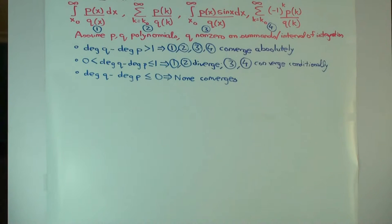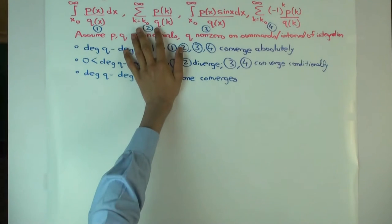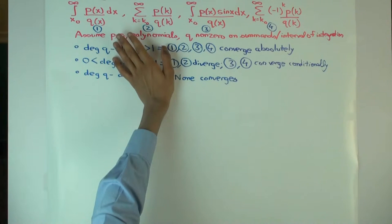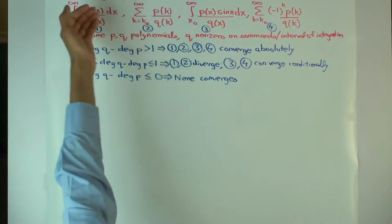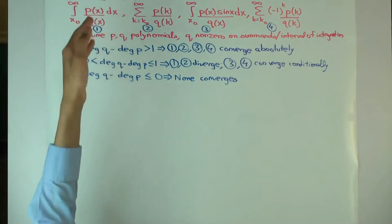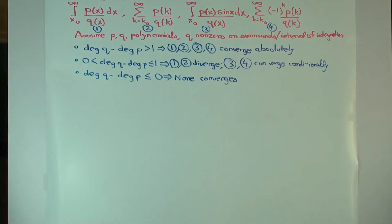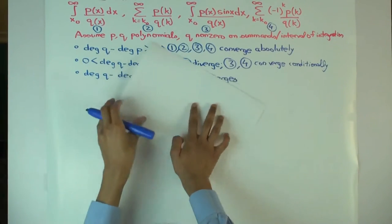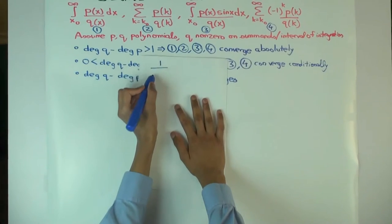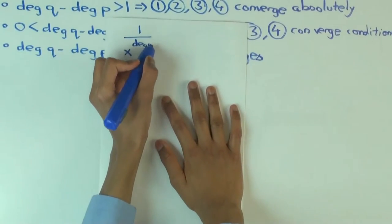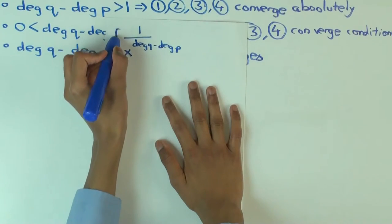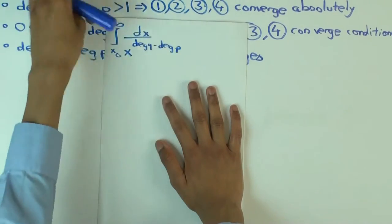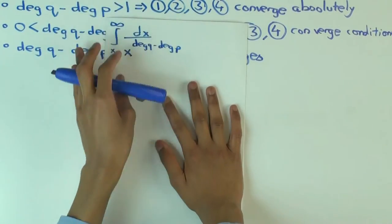How do you actually show these results? The summation problems can be converted to integration problems using the integral test. The integration problem can then be handled by basic comparison or limit comparison, reducing it to integrating 1 over x to the power (degree q minus degree p). Both types 1 and 2 ultimately reduce to the question of whether this integral converges.